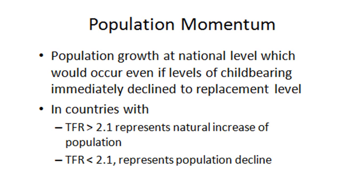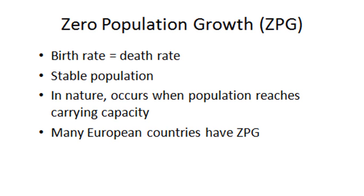Even though global population growth rates have been reduced, we're still adding large numbers of people — this is because of population momentum. There's still population growth even if you immediately decrease the fertility rate to replacement level, because if you're adding a billion people to the population and each of those people is having a child, you add another billion. It takes a while for the population to catch up with the declining growth rate. When the TFR in a country is greater than 2.1, population increases; when TFR is less than 2.1, population declines.